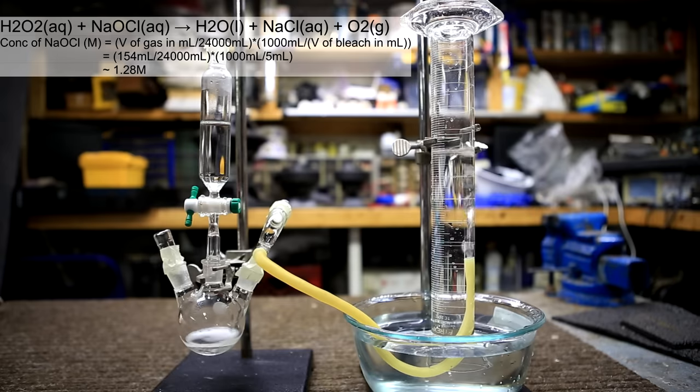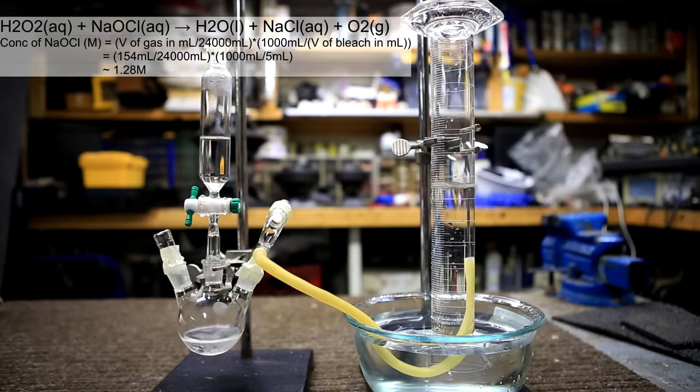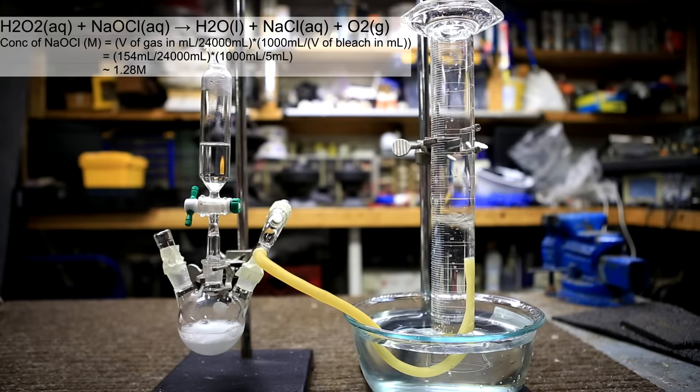Hydrogen peroxide is added until no more bubbling occurs and the reaction is complete. The level of the water in the graduated cylinder is measured before and after the addition of the gas. By calculating the amount of gas that has evolved and on the assumption that one mole of gas occupies a volume of 24 liters, we can calculate the concentration of the bleach.